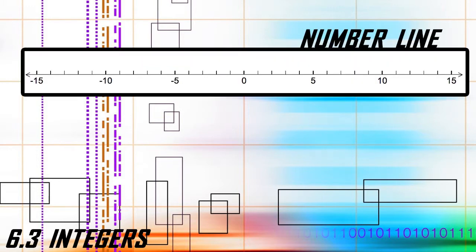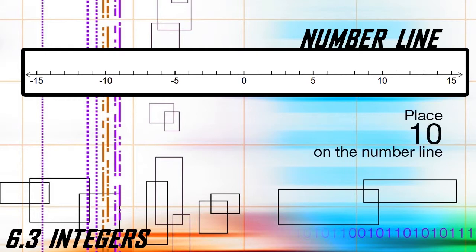The first thing we need to do is learn the steps on placing integers on a number line. When we're given the problem 'place 10 on a number line,' here are the steps for positive integers. Number one, start at zero. Number two, count to the right the number of units until you get to the integer. Number three, place a dot and label that number.